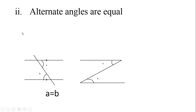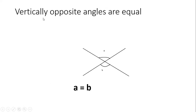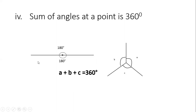Rule three: vertically opposite angles are equal. When two lines cross each other, the angles directly opposite one another are equal. So angle a and angle b are vertically opposite and therefore equal. The fourth rule is that the sum of angles at a point equals 360 degrees.